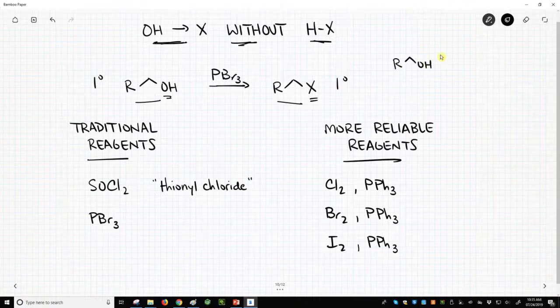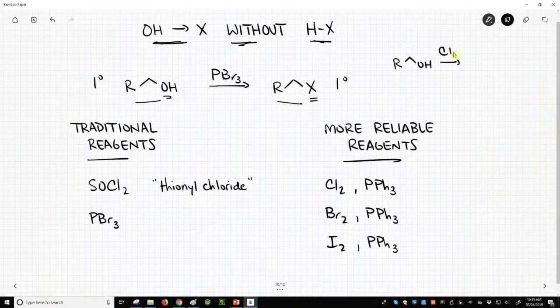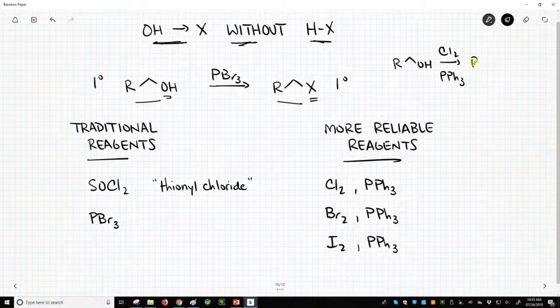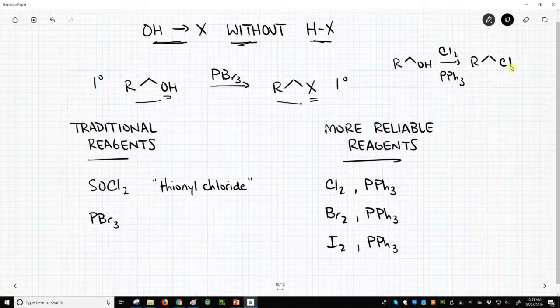Whether it's a primary, secondary, or tertiary. So let's say we do Cl2 and triphenylphosphine. We will get the chloride out of this reaction. This is an important transformation.